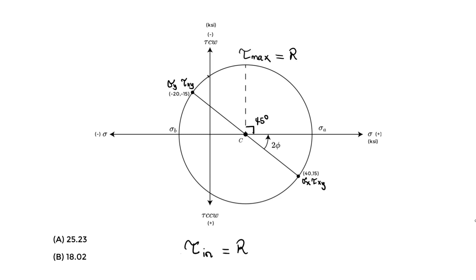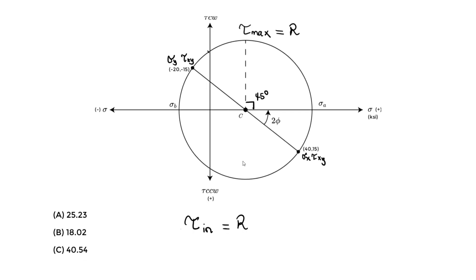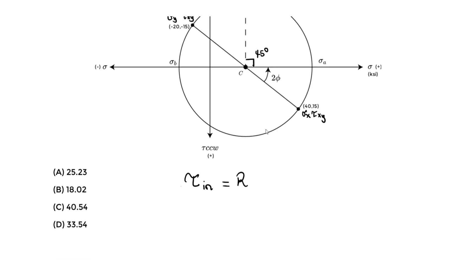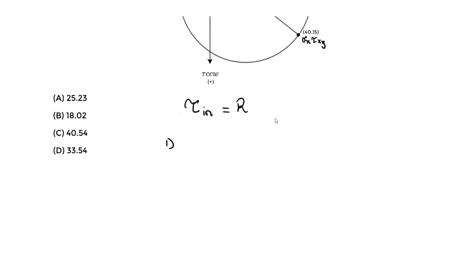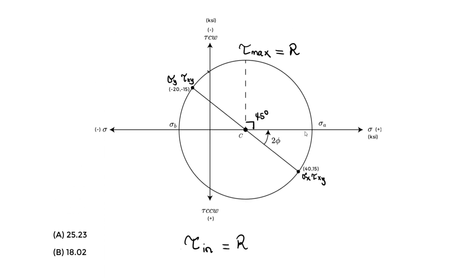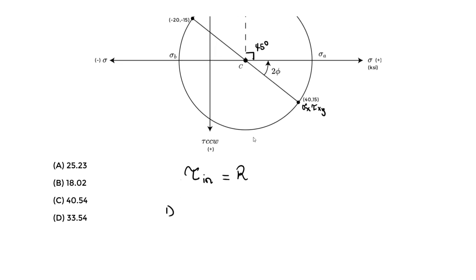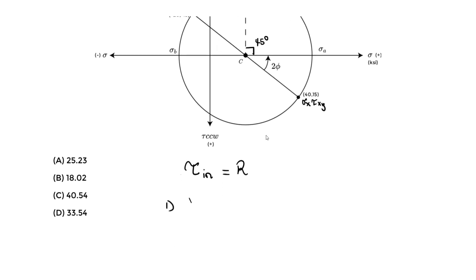To find the radius, we first need to find the center of the Mohr's circle. Step one is to find the center, because we'll determine the radius graphically using the Mohr's circle. The center can be determined by taking the average: sigma x plus sigma y divided by 2. This formula is also noted in the handbook as the equation for the center of the Mohr's circle.